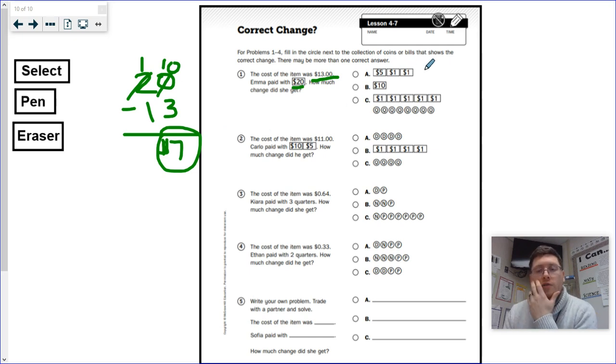All of this is dollar bills. So now I need to look at my answer choices. A says I have a $5, a $1, $1. So I have 5, 6, $7. Oh, that one's correct. So I'm going to color that in.